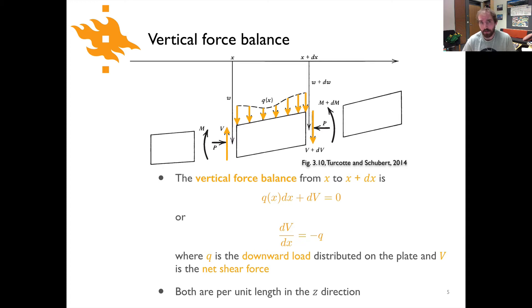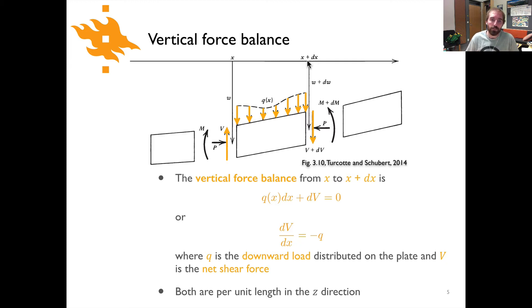We start by looking at the vertical force balance along this plate, in the context of a tiny piece along the x-axis. At position x is one end of this little piece, and at the other end we're at position x + dx — an infinitesimally small distance along the x-axis. There are basically two different vertical forces acting on the plate.